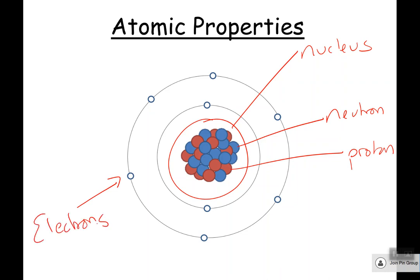In GCSE physics we don't really focus too much on electron arrangements, though it is important to get into good practice. It normally goes 2, 8, 8 in chemistry in terms of how many electrons you have in each shell. These shells are basically energy levels — you can have a certain number of electrons in each energy level. Electrons can make transitions; they can move up and down between shells, but we'll come to that later on.